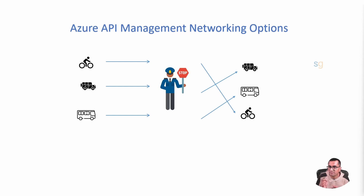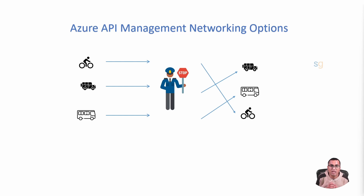Let's understand Azure API Management in simple terms. Think of Azure API Management like a traffic police at a busy intersection in a city. The traffic police helps vehicles — in our case, data — move safely and quickly from one point to another. The traffic police makes sure that everyone can get where they need to go without running into any issues, decides who can go where, and keeps things moving smoothly. Just as the traffic police controls traffic, Azure API Management directs data traffic and decides which data goes where.